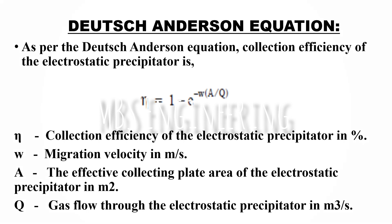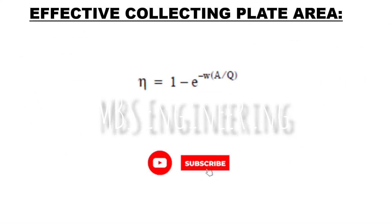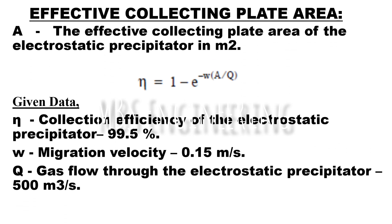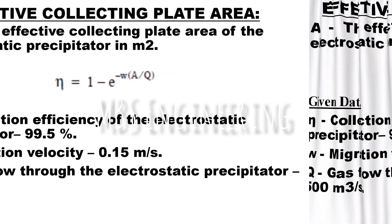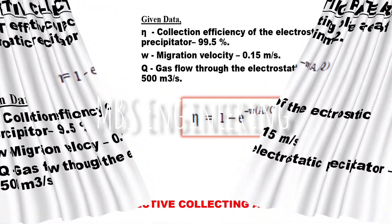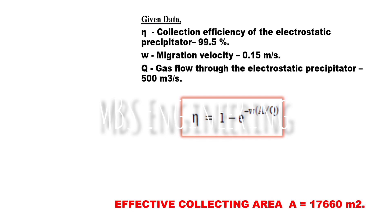Next, we will calculate the effective collecting plate area using the rearranged Deutsch-Anderson equation. The effective collecting plate area (A) equals gas flow (Q) multiplied by the logarithm of one minus collection efficiency (η), divided by migration velocity (ω). Assume the following data for calculating the effective collecting plate area in square meters.